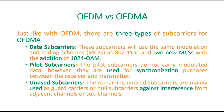Just like in OFDM, there are three types of subcarriers in OFDMA as well: data subcarriers, pilot subcarriers, and null subcarriers. They use the same modulation and coding schemes as used in AC, and on top of that they added two new MCS values — MCS 10 and 11 — because they added 1024-QAM. The pilot subcarriers do not carry data; however, they are used for synchronization purposes between the receiver and transmitter.